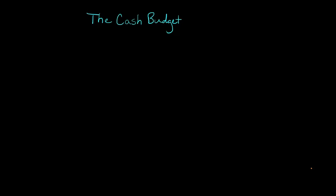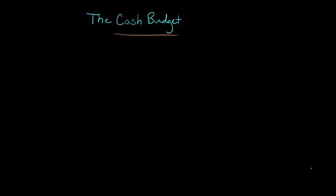In this video, we're going to walk through an example of how to put together a cash budget for a firm. First, it's important to understand that before you put together the cash budget, you need to have all the other budgets prepared first. So when we think about the sales budget, the production budget, all these other budgets have to be put together first. We need to know about our direct material expenditures that we're planning before we'd be able to put together the cash budget.